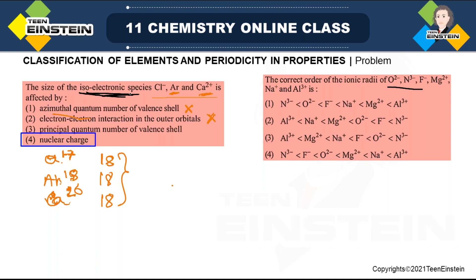Let's check whether they are isoelectronic. Oxygen has atomic number 8 with two extra electrons — 10 electrons. Nitrogen has atomic number 7 with three extra electrons — also 10. Fluorine has atomic number 9 with one extra electron — also 10. Magnesium has atomic number 12 with two electrons less — also 10. Sodium has atomic number 11, one electron less — 10. Aluminium has atomic number 13, three electrons less — also 10. So all of them are isoelectronic species with 10 electrons.